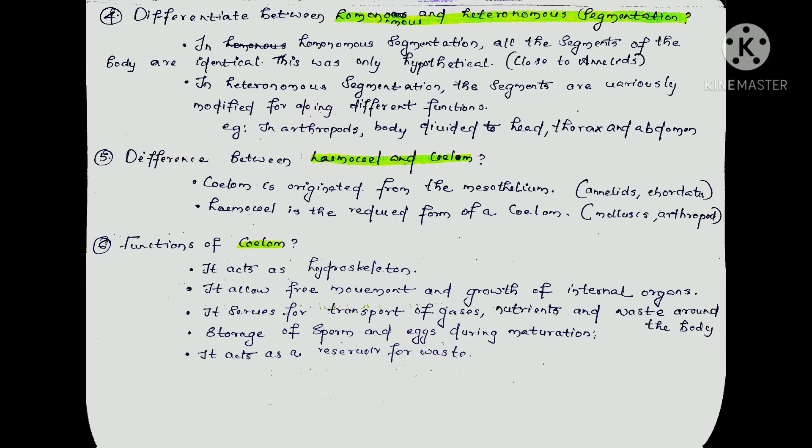The next question is: distinguish between homonomous and heteronomous segmentation. Segmentation is a type of metamerism where the body is divided into segments. In homonomous segmentation, all the segments of the body are identical. This is only hypothetical — it is considered theoretically possible but is closely homonomous rather than perfectly identical in practice.